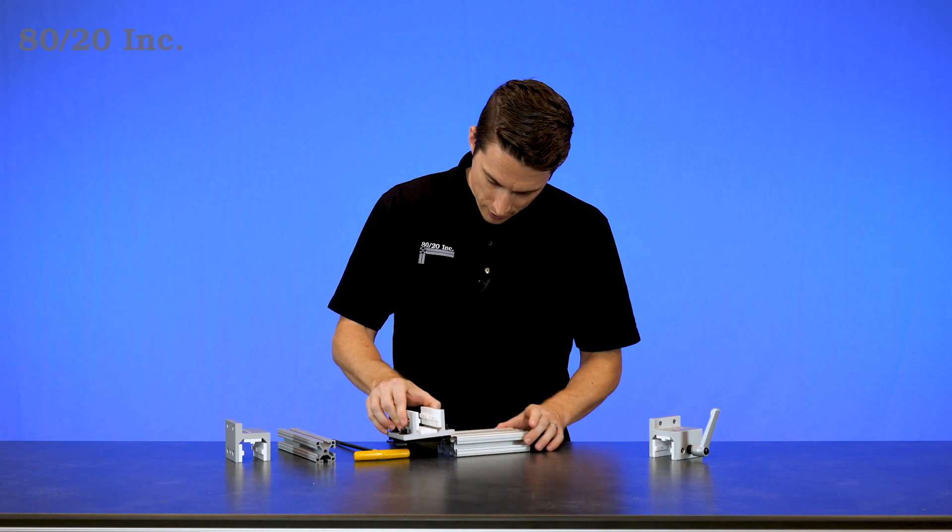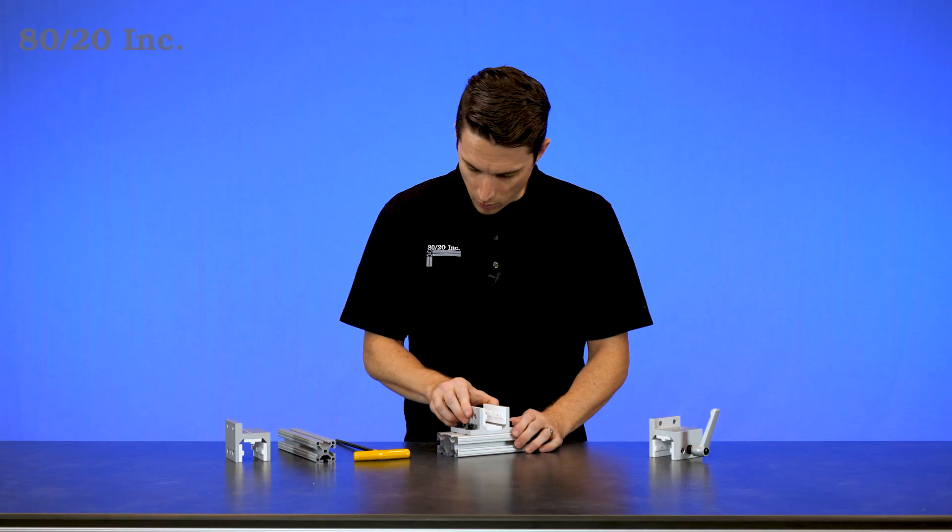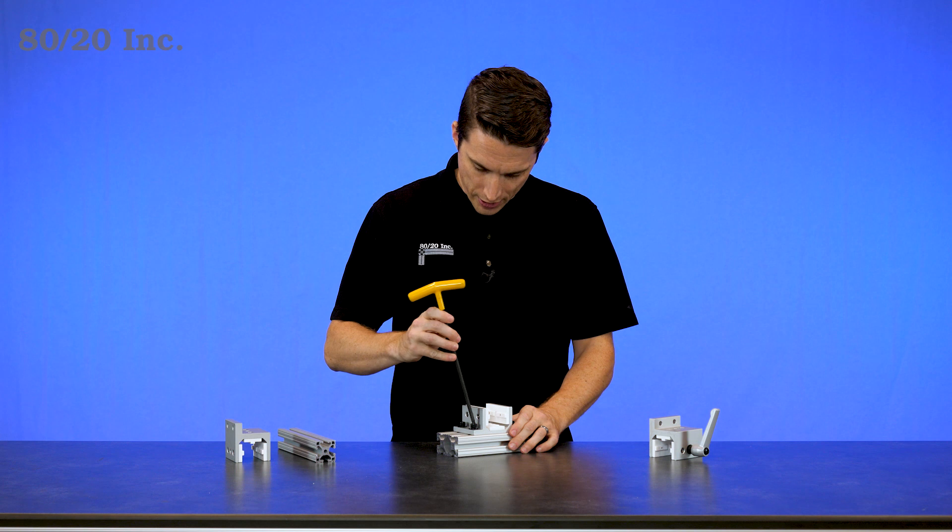So we have all those on there, we're just going to slide it into the open T-slot, get it where we want it, and tighten it down with our wrench.